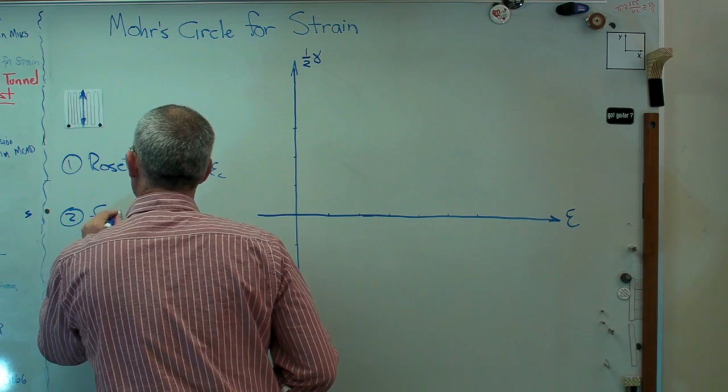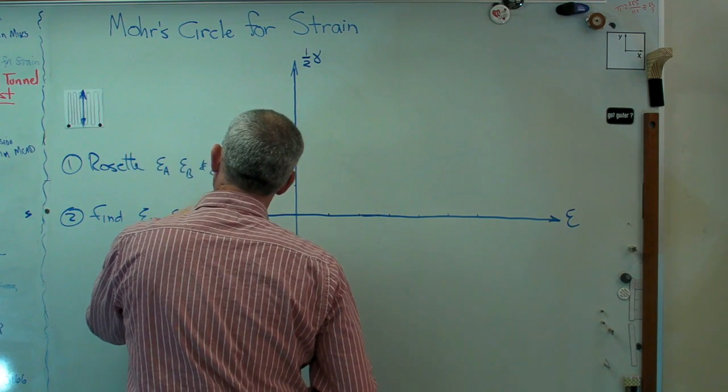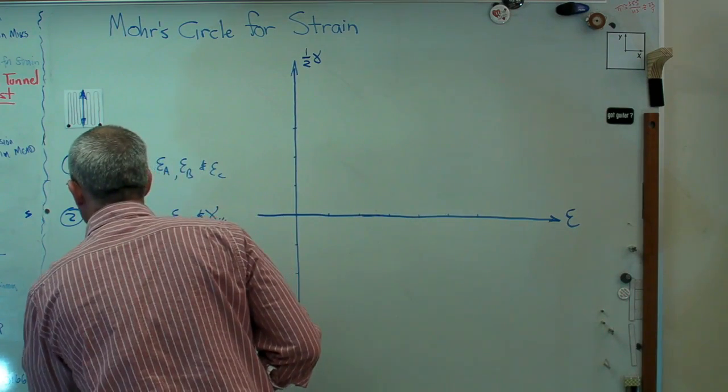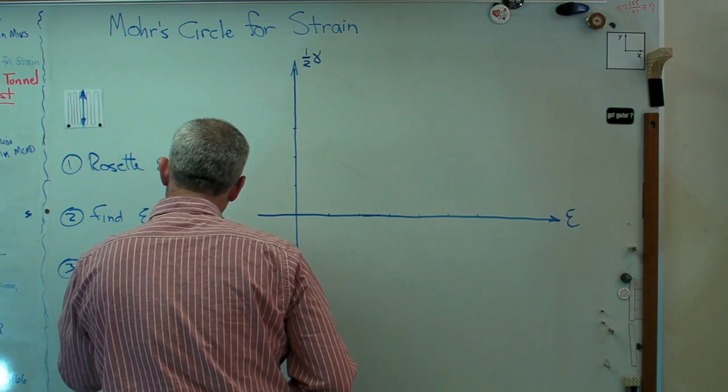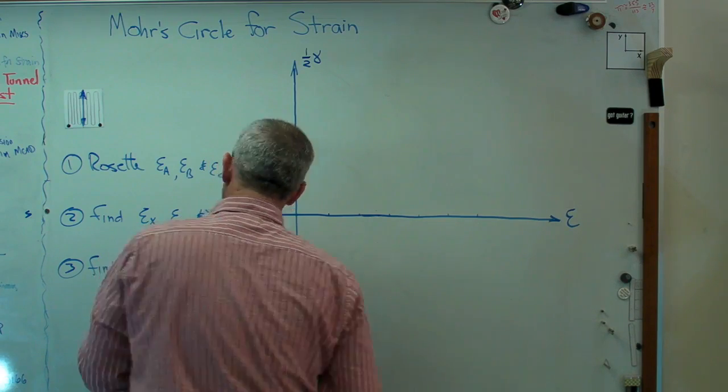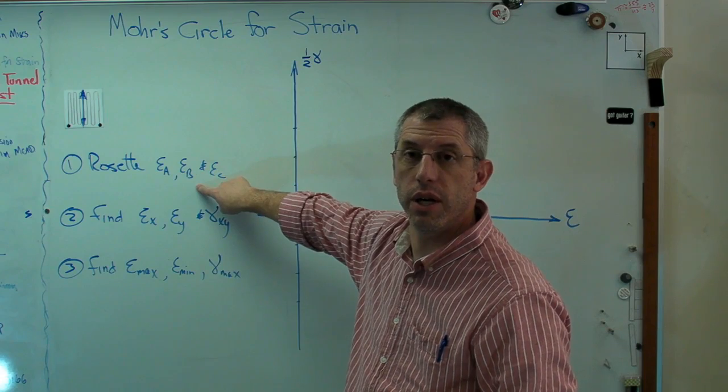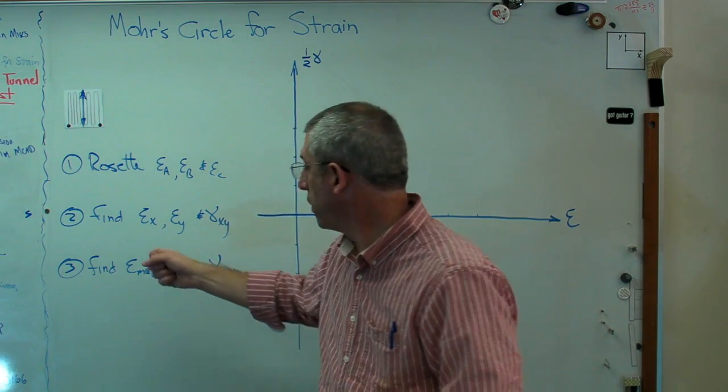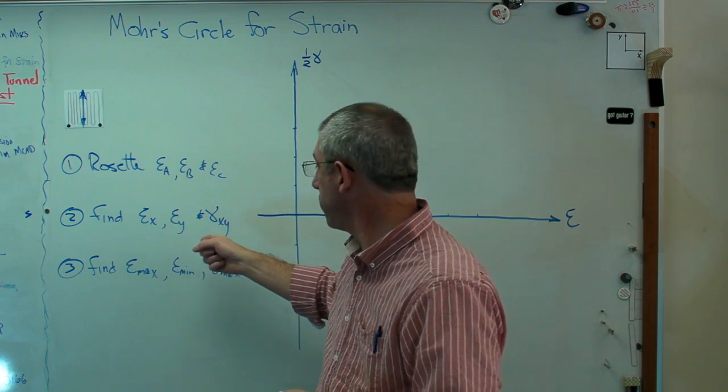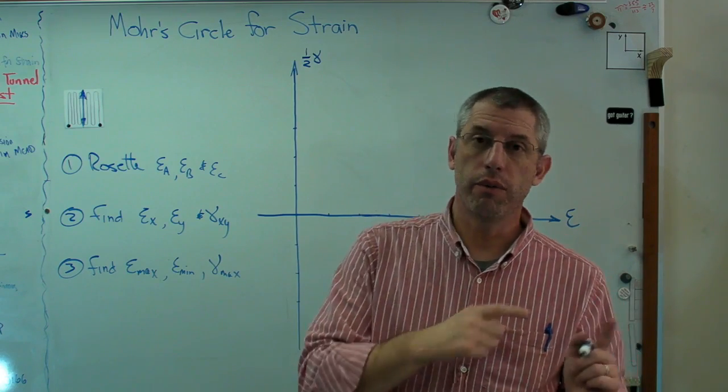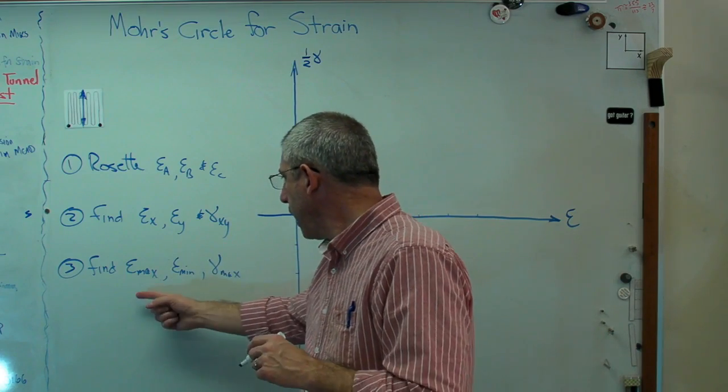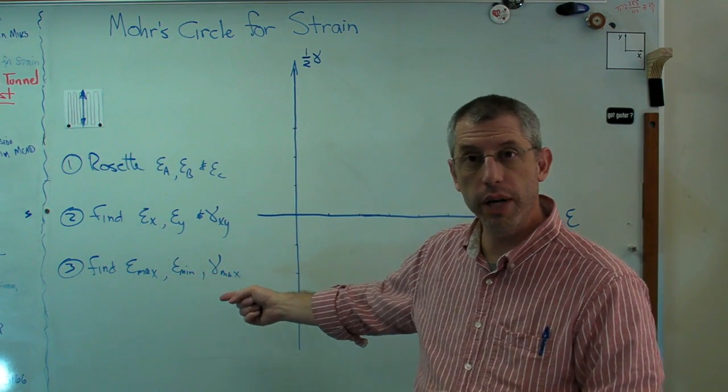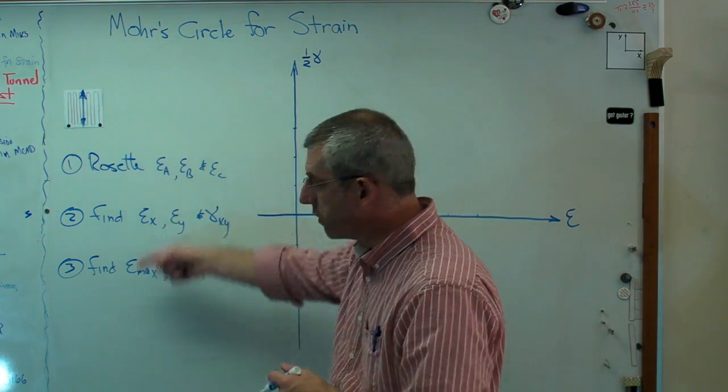We can do a little algebra, and we can find epsilon x, epsilon y, and gamma xy. That's step two. Step three, find epsilon max, epsilon min, and gamma max. So I'm going to start with three gauges in a little arrangement on the surface of some part, and I'm going to measure three normal strains. I'm going to use some algebra and convert those to strain in the x direction, strain in the y direction, gamma xy, and I've got a couple videos on how to do that. And the last thing is, where Mohr's circle for strains comes in. Mohr's circle for strain will tell you that. That's the recipe we're going to follow.